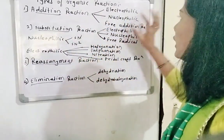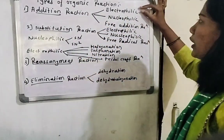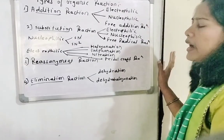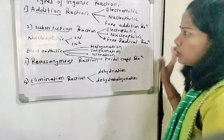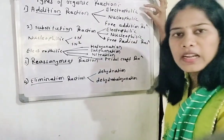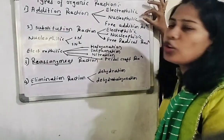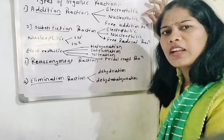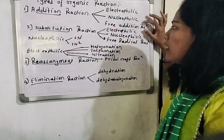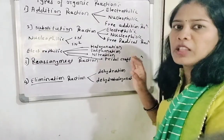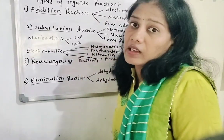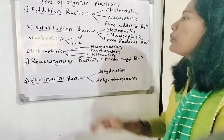Addition reaction has three types: Electrophilic, Nucleophilic, and Free Radical addition reaction. Electrophilic means attack of an electrophile, nucleophilic means attack of a nucleophile, and free radical addition reaction means attack of free radicals. After that, we will see these deeply.